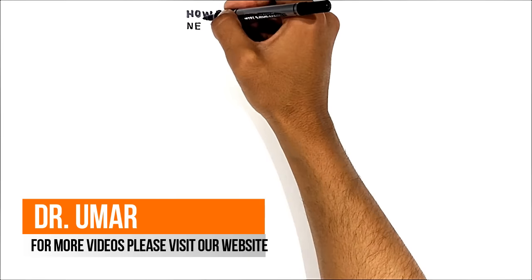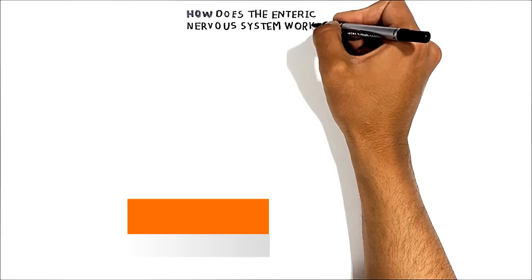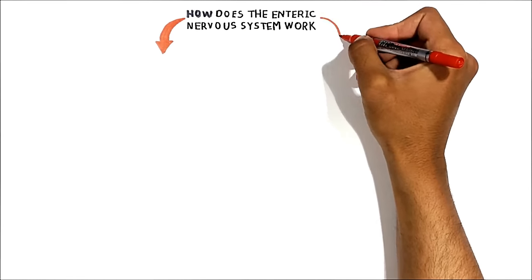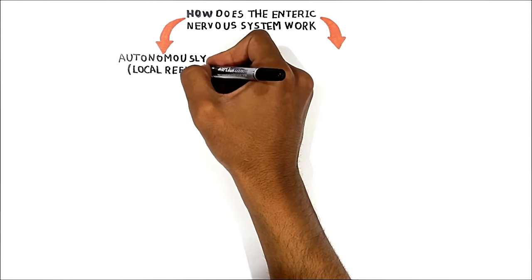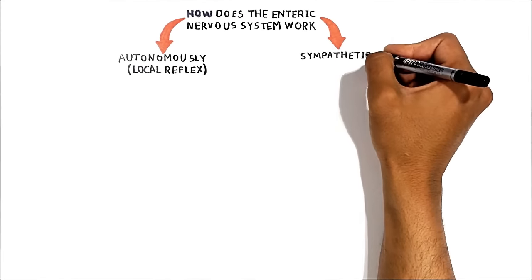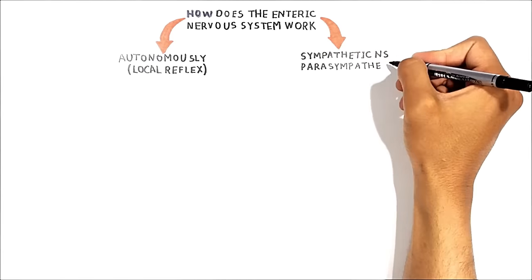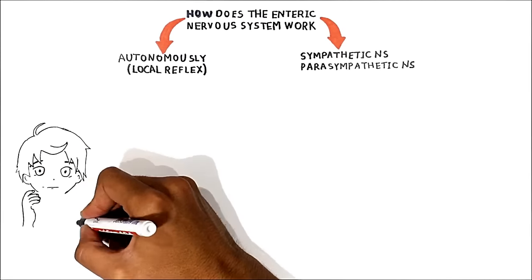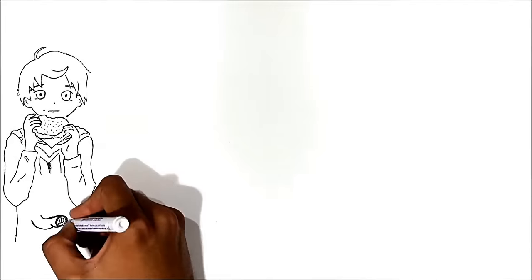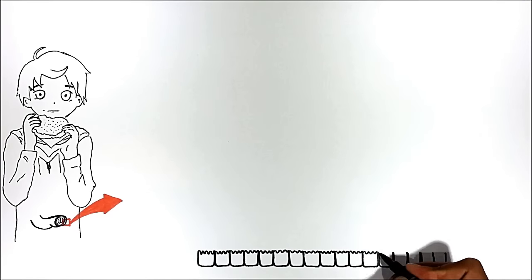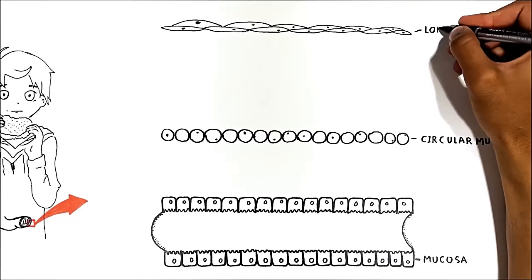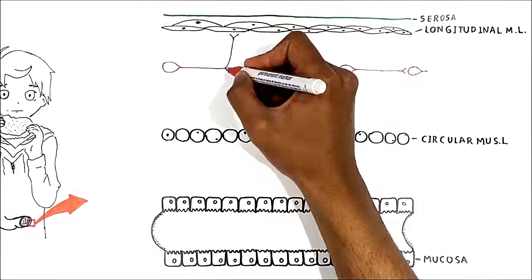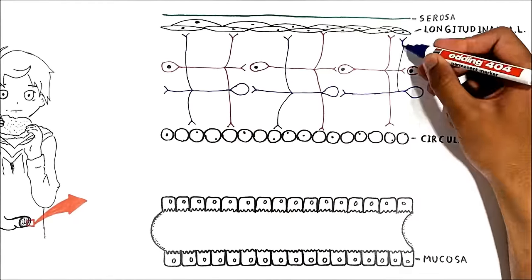Now let's talk in detail about how the enteric nervous system works, given the example of when a person eats something. It is extremely important to know that the enteric nervous system works in two different ways: first, it functions autonomously using the local reflex, and second, it also functions in communication with the sympathetic as well as parasympathetic nervous system. Let me first draw a section of the small intestine between the duodenum and ileum. We have the mucosa, circular muscle layer, longitudinal muscle, and the myenteric plexus, which consists mainly of three types of neurons.